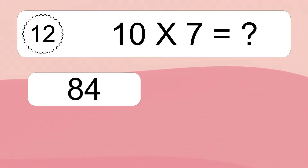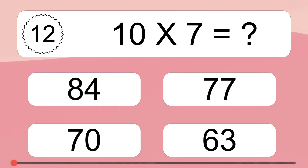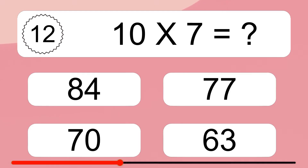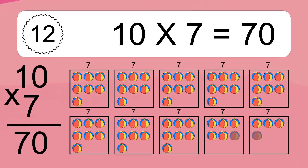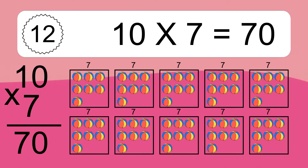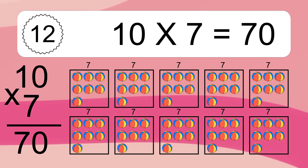10 times 7 equals what? 10 times 7 equals 70. We have 10 boxes, and each box has 7 colorful balls inside. If you count all the balls in all the boxes together, you will have 10 times 7 balls. This equals 70 balls.